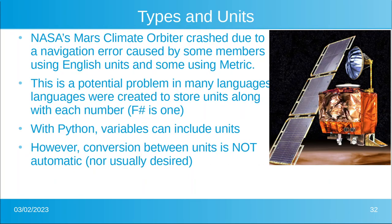Types and units. NASA famously sent up the Mars Climate Orbiter and it crashed on the surface of Mars because some of the team members were using English units in the variables and some were using metric units. That is a potential problem in many, many languages. So languages were actually created to store units along with each number, for example F sharp. With Python, variables can include units but conversion between the units is not automatic. Just keep that in mind.